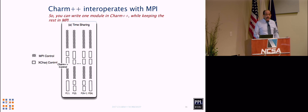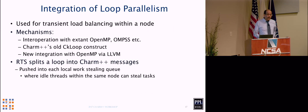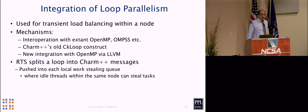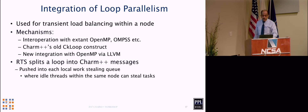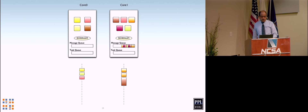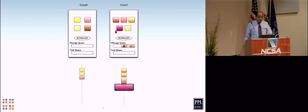CHARM++ interoperates with MPI, either in time or in space or both, and with OpenMP. It also has its own capabilities for loop parallelism. We now have an integrated OpenMP — our own OpenMP runtime implemented inside LLVM. You can use the standard OpenMP or our version. OpenMP loops can be fired from any core, and chunks will run on any other core if necessary — you can think of it as nested parallelism.